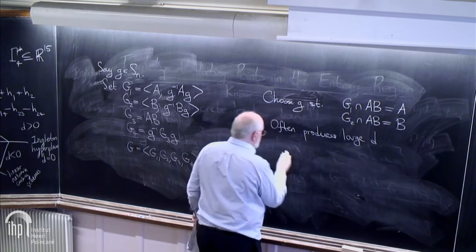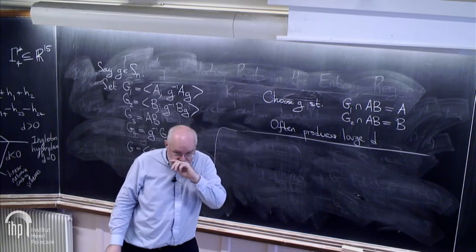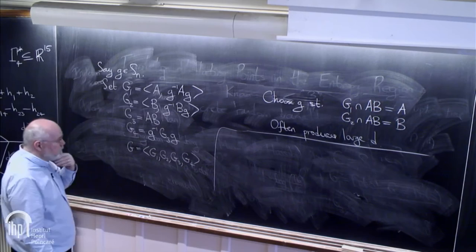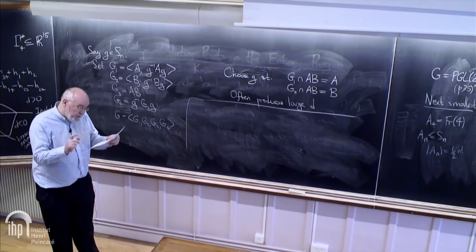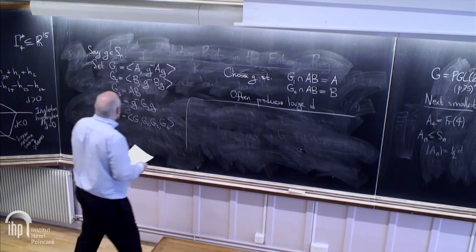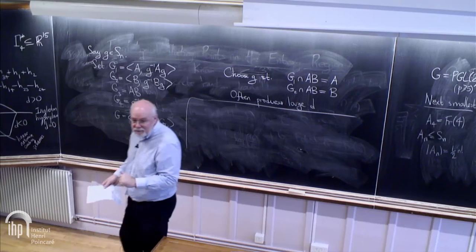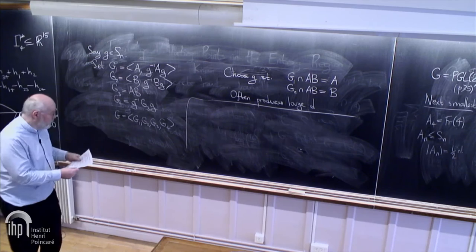The idea is to choose little g such that you want G1 to be relatively small. In general, this could be the whole of SN for a random G. You want this to be A and this to be B, and then you're in good shape. This often produces large S. It's very important—A and B are not assumed normal. You get interesting factorizations. With A and B normal, you're not going to violate Ingleton. Actually, it could go either way. But some of the more interesting cases are where A and B are not normal in AB.